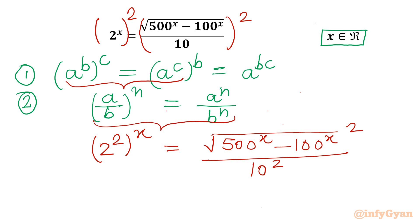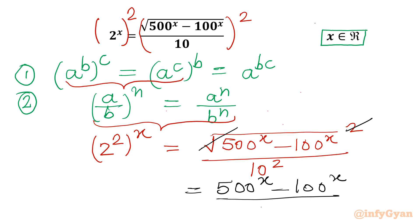Now I can cancel the square root with the square. So I can write RHS as (500^x - 100^x) / 100. And on the LHS, 2^2 = 4, so I can write 4^x. This equation is now exponential without radicals.